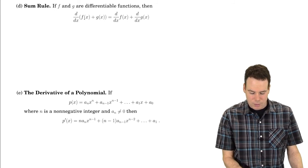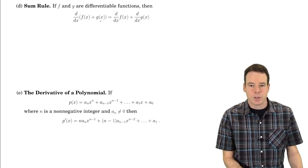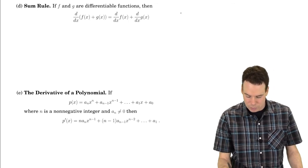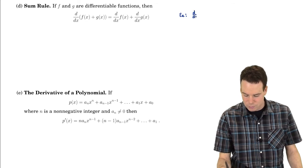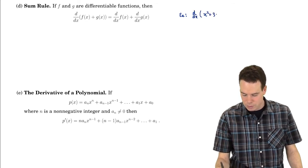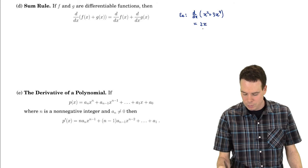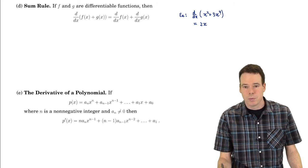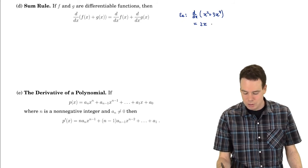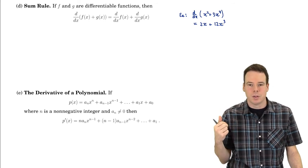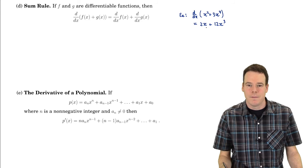The sum rule: if you want to compute the derivative of a sum of two functions f plus g, just compute their individual derivatives and add the results. For example, the derivative of x squared plus 3x to the fourth: the derivative of x squared is 2x by the power rule; the derivative of x to the fourth is 4x cubed, and by the constant multiple rule, the derivative of 3x to the fourth is 12x cubed. So the answer is 2x plus 12x cubed — an illustration of the power rule, constant multiple rule, and sum rule all used together.